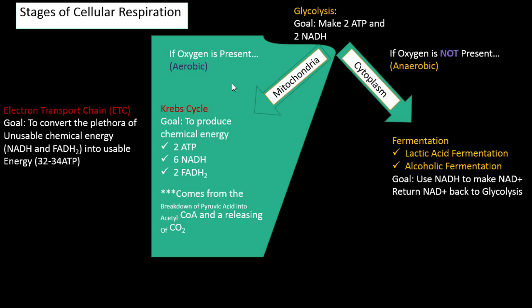The first reaction we're going to talk about is the Krebs cycle. The goal of this cycle is to produce chemical energy, and a lot of it. We will get two ATPs towards our total of 36 ATPs for all of cellular respiration, but we also get a lot of electron carriers: six NADHs and two FADH2s. This Krebs cycle is a lot like the light-dependent reaction in photosynthesis — its job is just to make a whole bunch of electron carriers to help produce a high-energy sugar later on in the Calvin cycle.